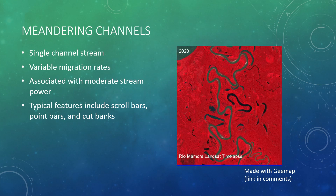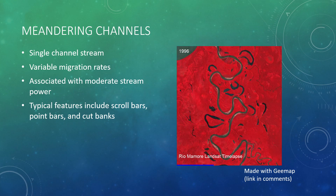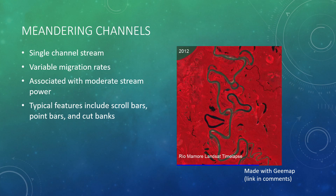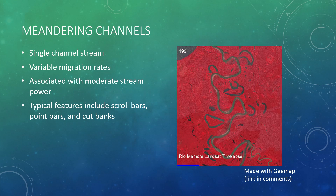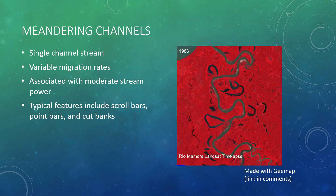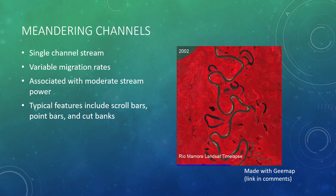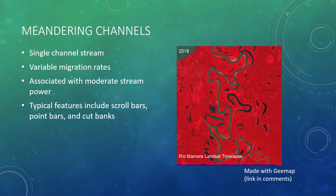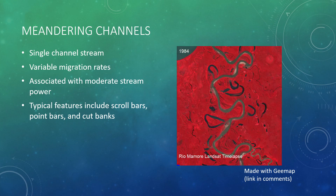Now let's move on to meandering channels. Similar to straight channels, they are typically a single channel stream. However, meandering rivers exhibit highly variable rates of channel migration based on the underlying materials such as silts, clays, sands, and gravels. Stream power is often more moderate in these systems. Typical features include meander scrolls, which are linear features on the inside of a meander bend; point bars, which are sandy deposits on the apex of the inside of a meander bend; and cut banks, which are erosional banks that alternate sides with point bars to form a progression of erosional and depositional features. The GIF on the right is of the Rio Memor in Brazil. The high migration rates suggest that the underlying substrate is easy to mobilize and the stream power is higher. We can see point bars as brighter features signifying sand around the river, and also scroll bars on the inside of meander bends throughout the entire GIF.